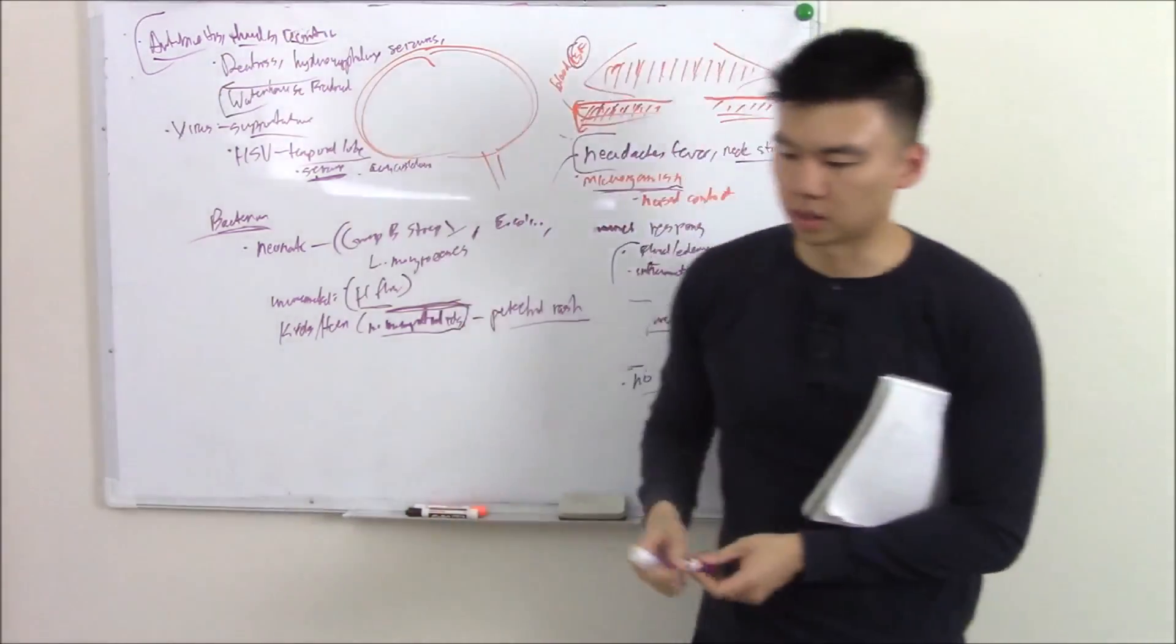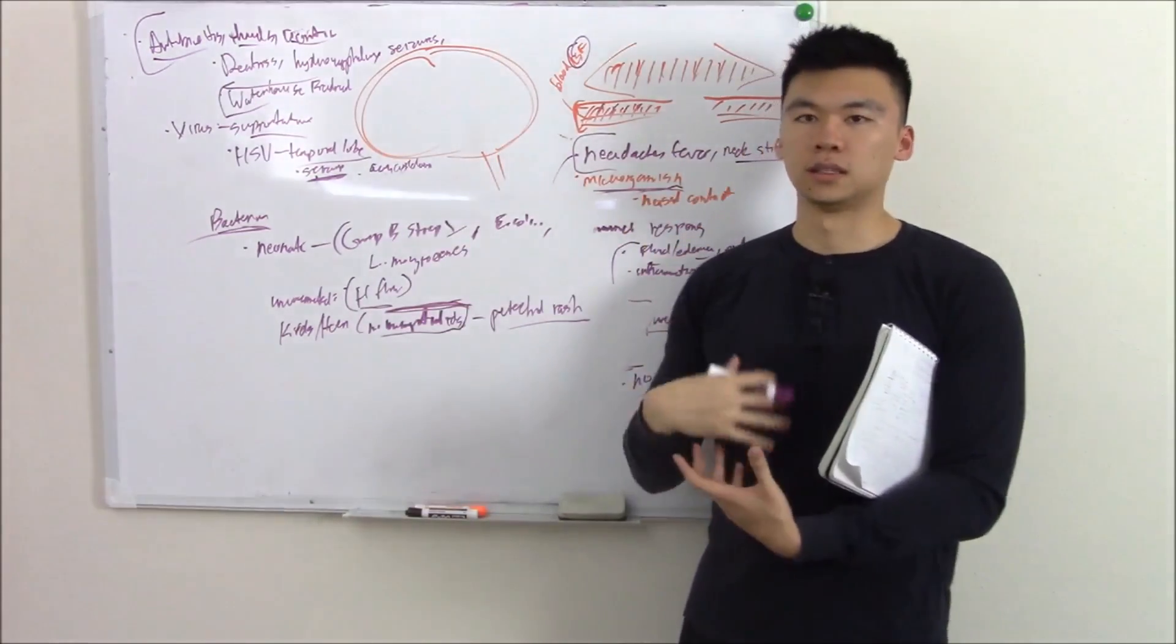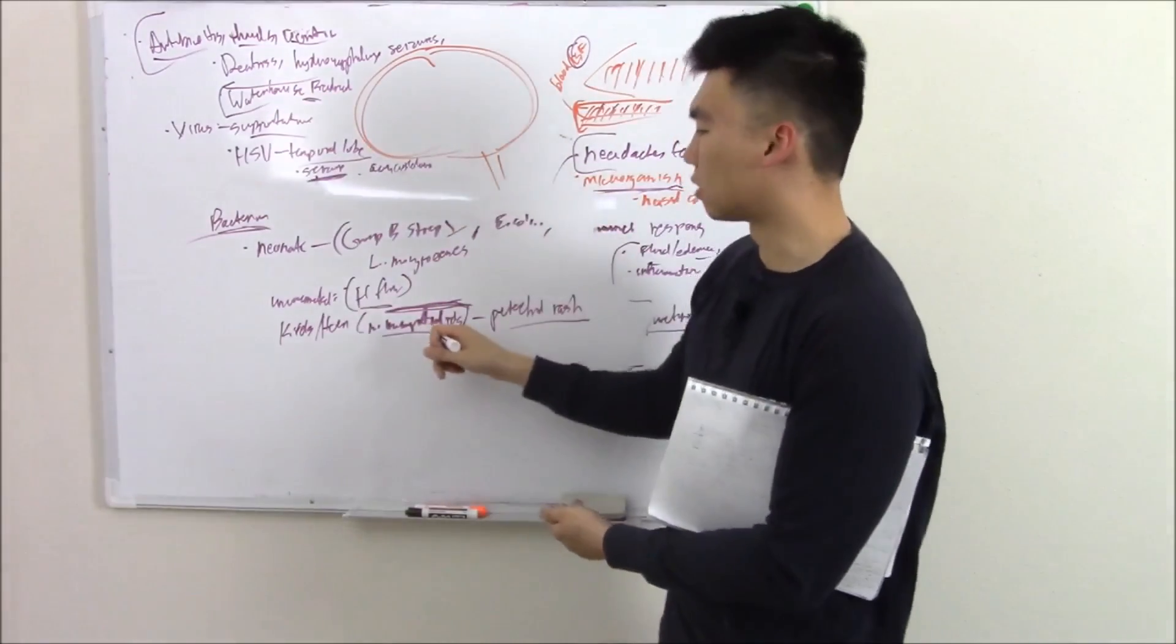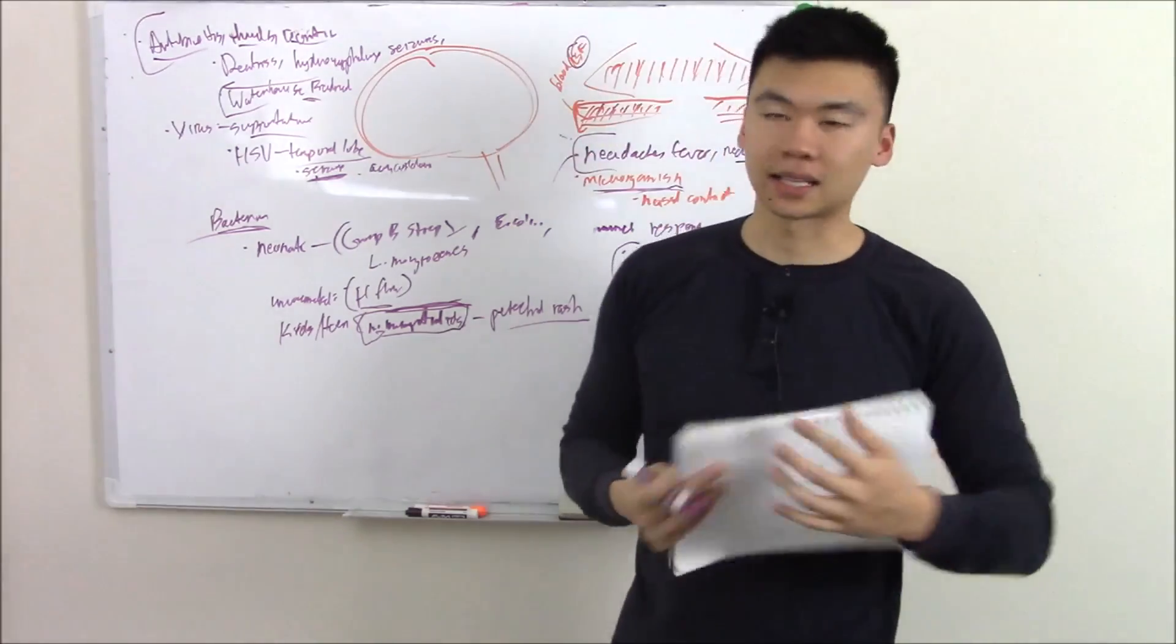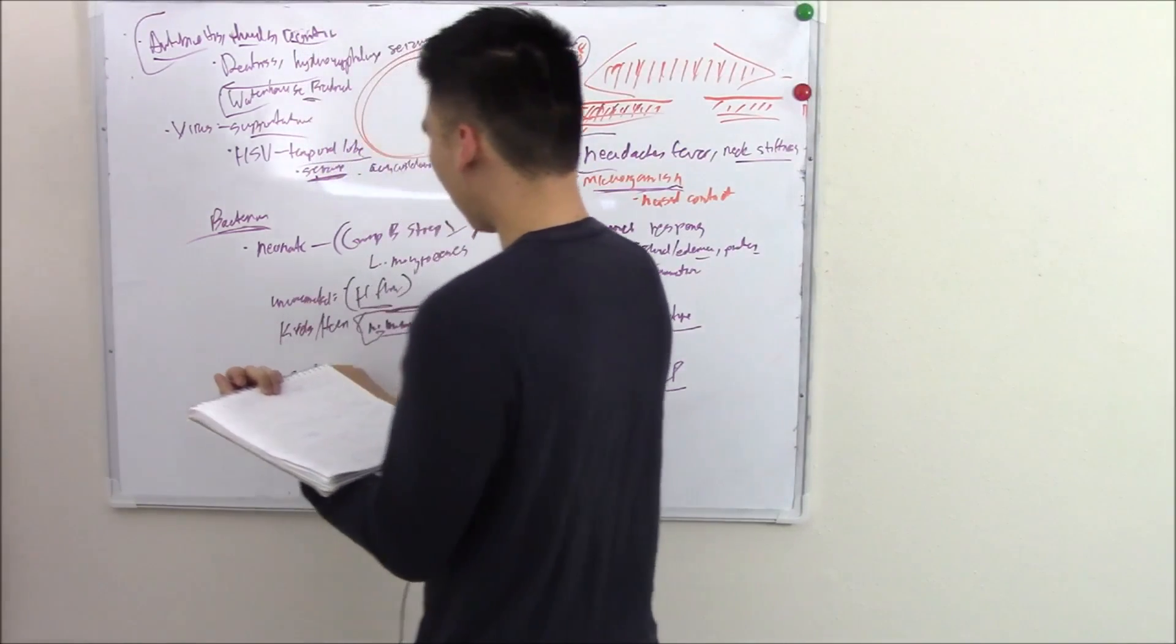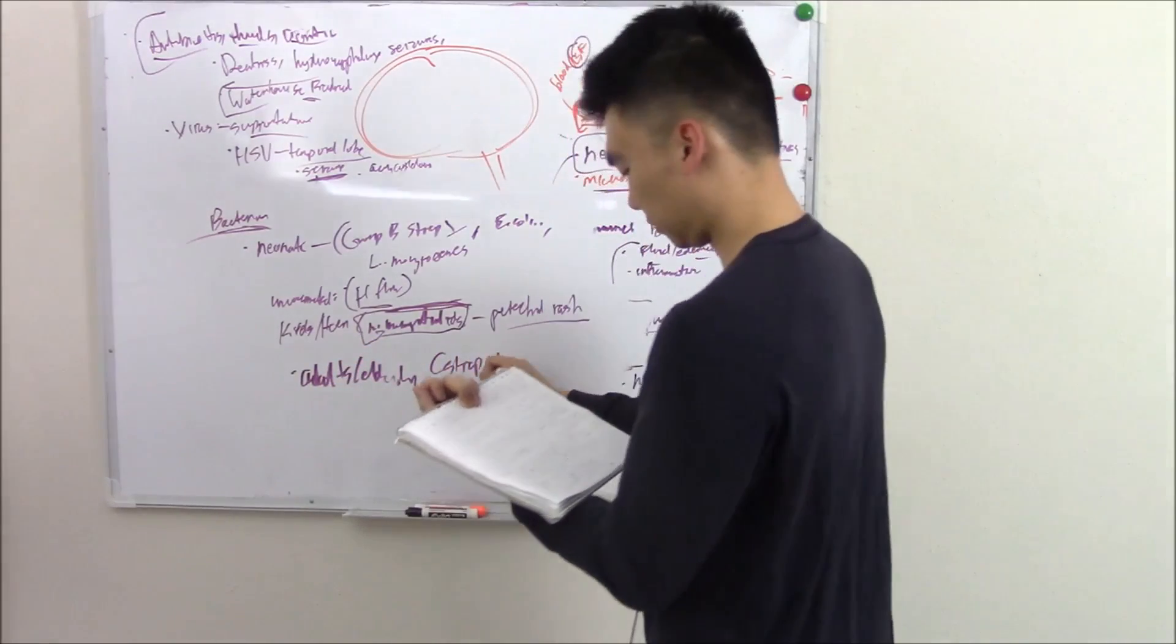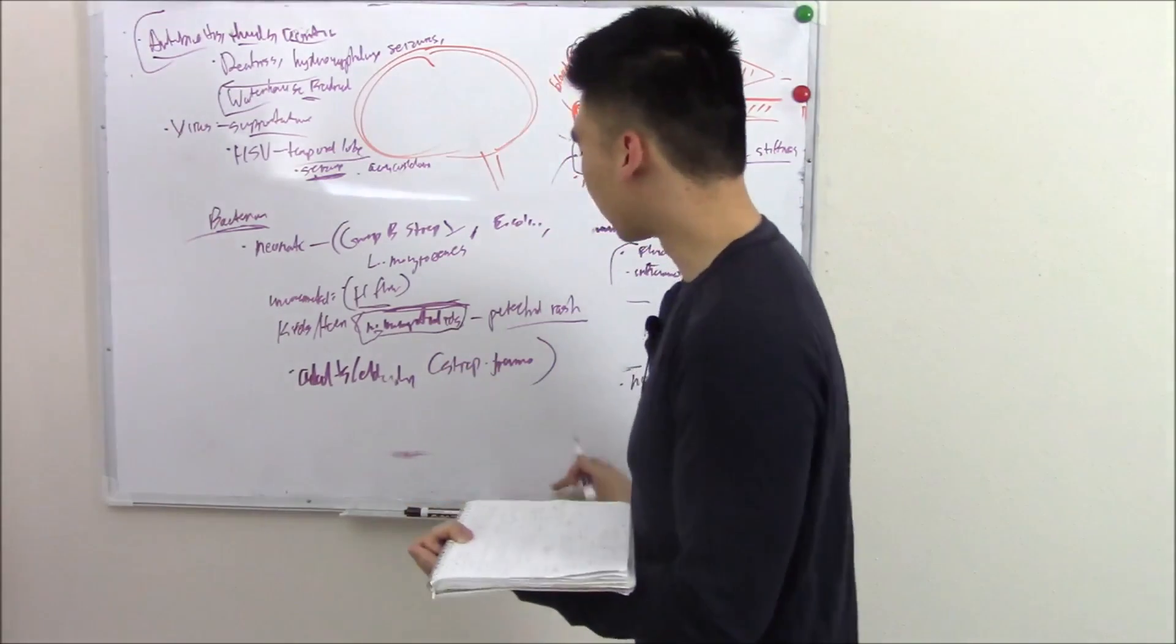So they might say a patient comes in with headache, petechial rash, and then they develop shock, sepsis, where they're at risk for the Waterhouse-Friderichsen, particularly because this is the bug that's most implicated in it. That's how they like to ask those questions. Now, older still and all adults and elderly people, is usually Strep pneumo.